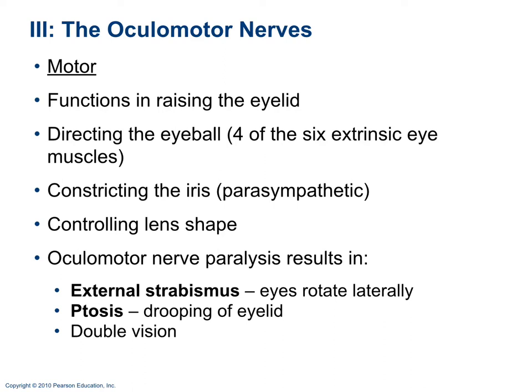Cranial nerve 3 is the oculomotor nerve — motor. Its functions include raising the eyelid, controlling four of the six extrinsic eye movements, constricting the iris, and controlling the shape of the lens. Paralysis of this nerve can result in drooping of the eyelid, double vision, and external strabismus, where the eyes rotate laterally.